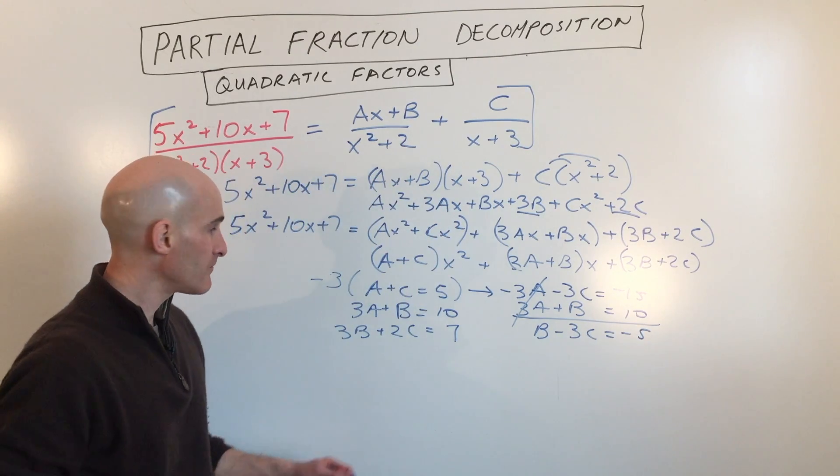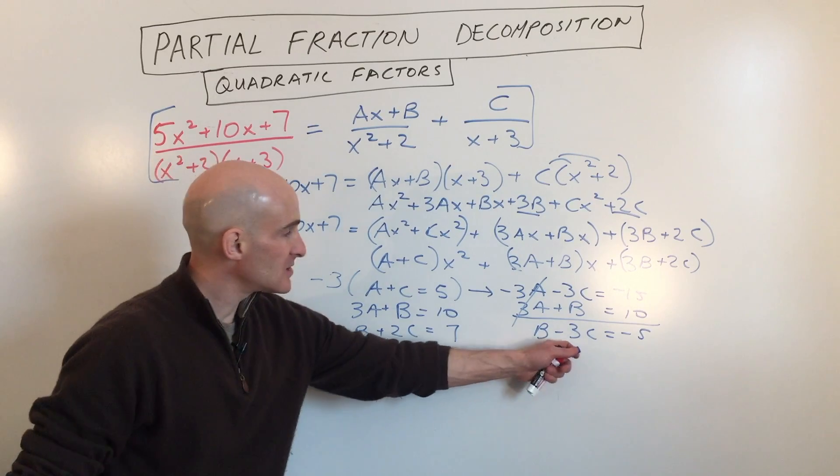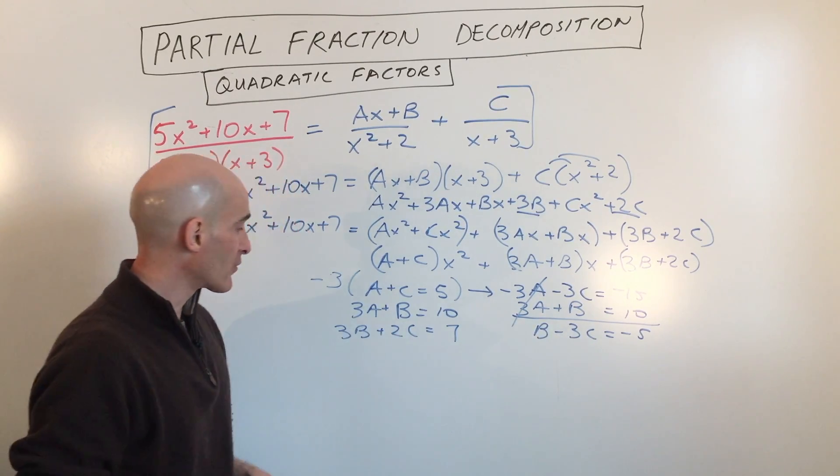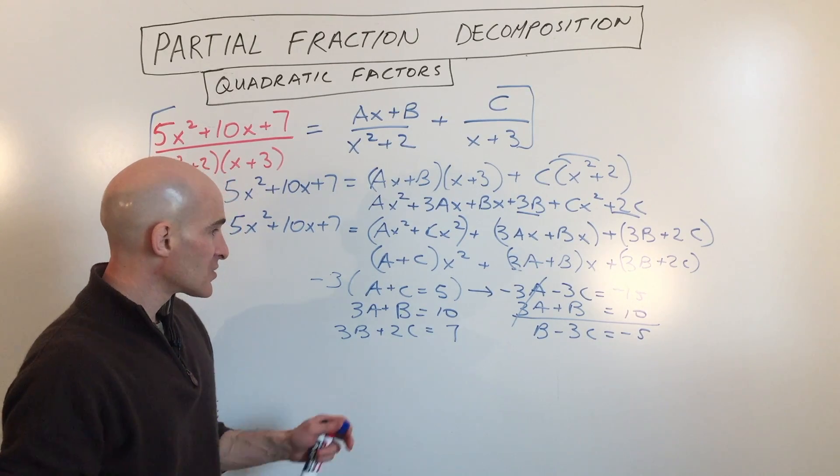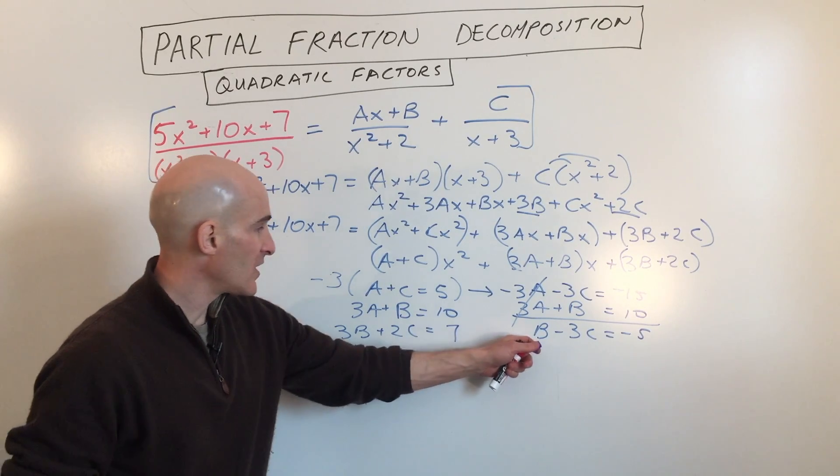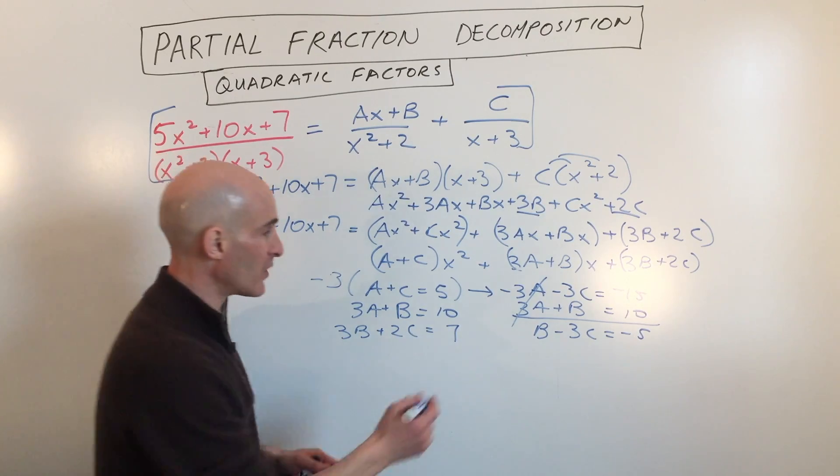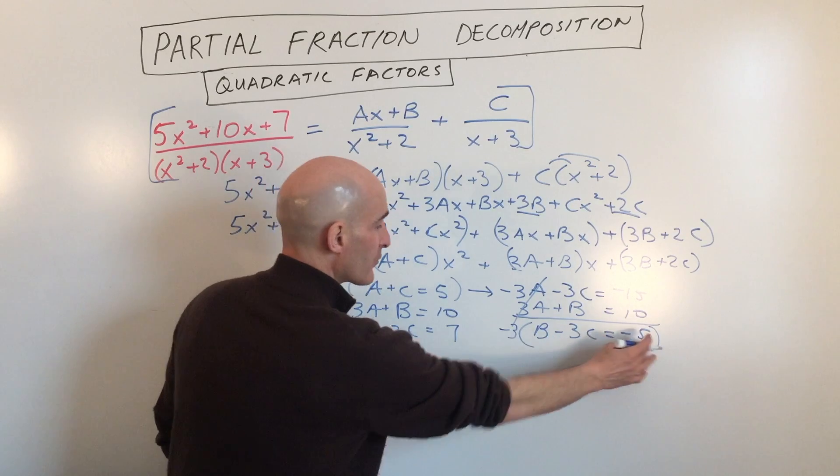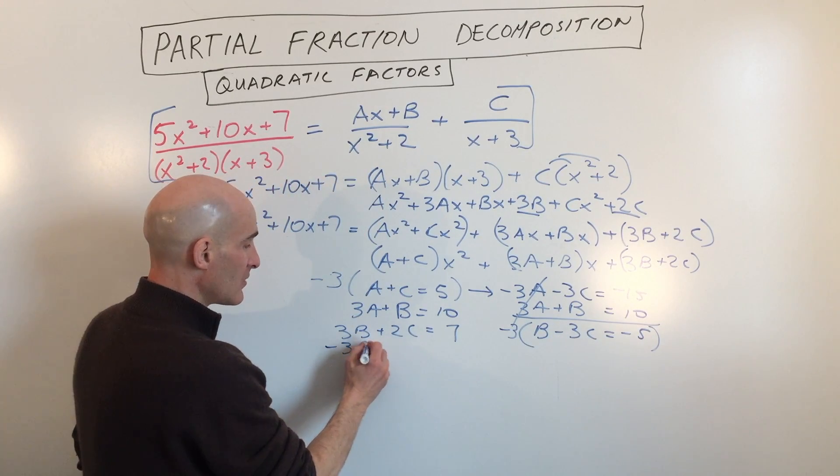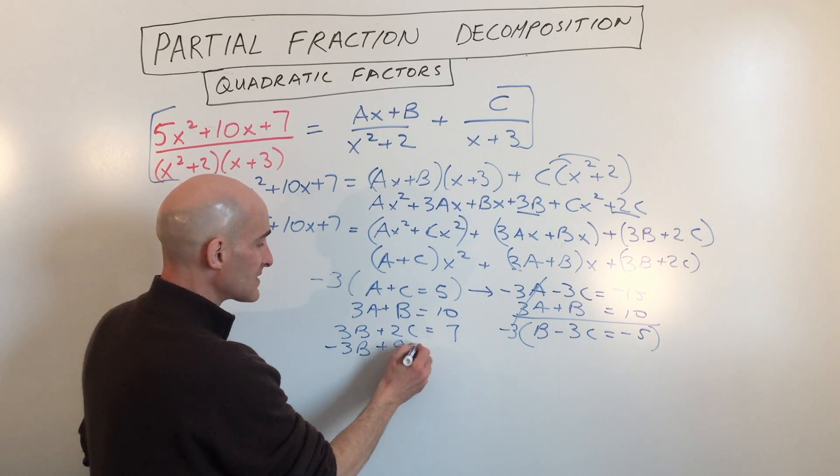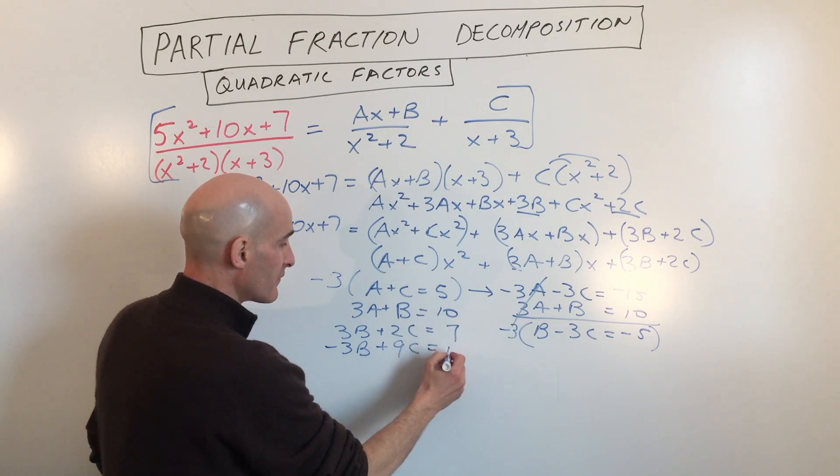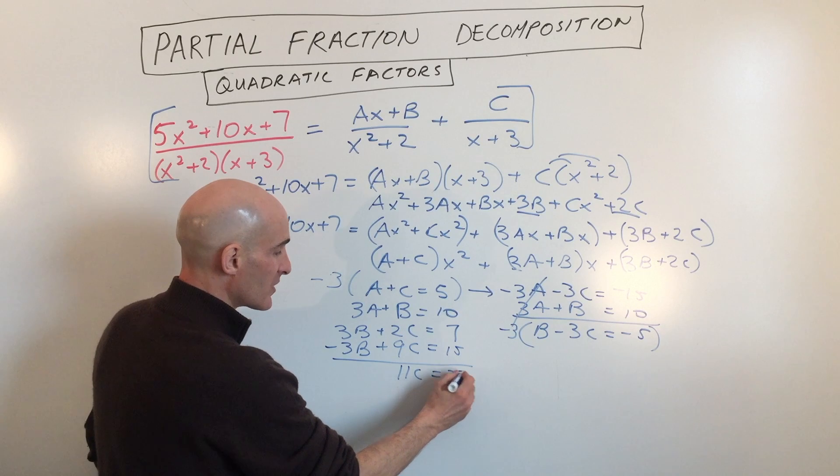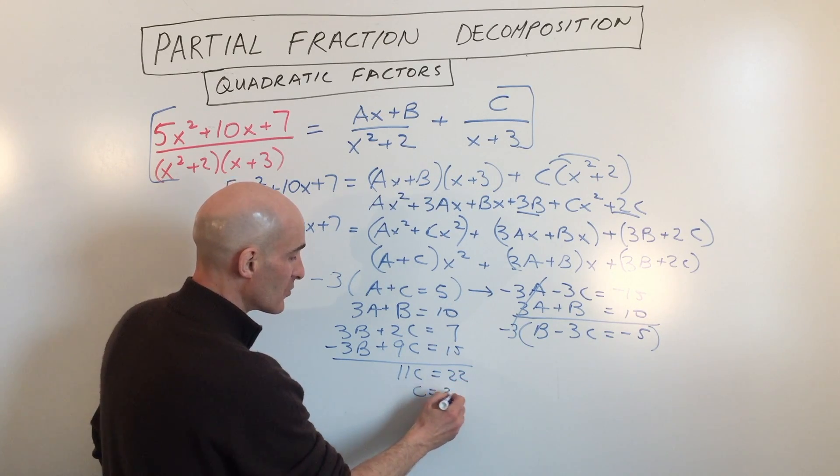So far so good. So now we're going to combine these two equations together. They just have b's and c's, to solve for either b or c. So why don't we multiply this equation here times negative 3 and combine it with this equation. So if we do that, multiply by negative 3, we're going to get negative 3b plus 9c equals 15. So if we combine these together, we get 11c equals 22. So now we know c equals 2.